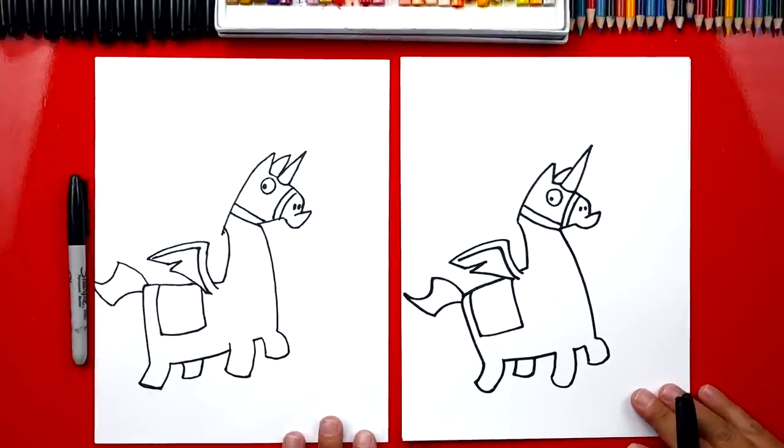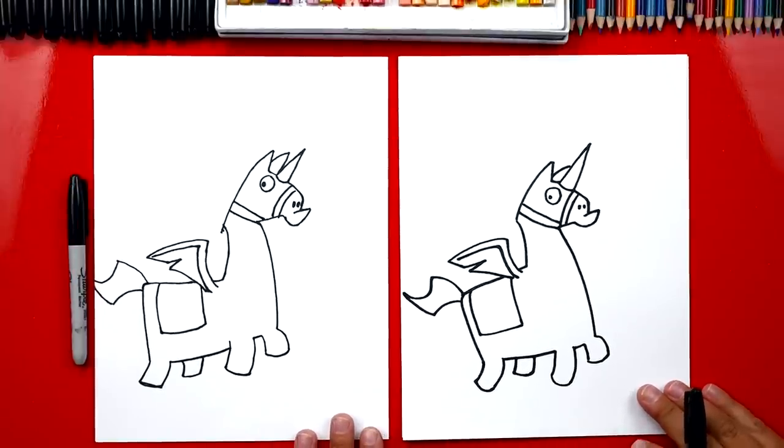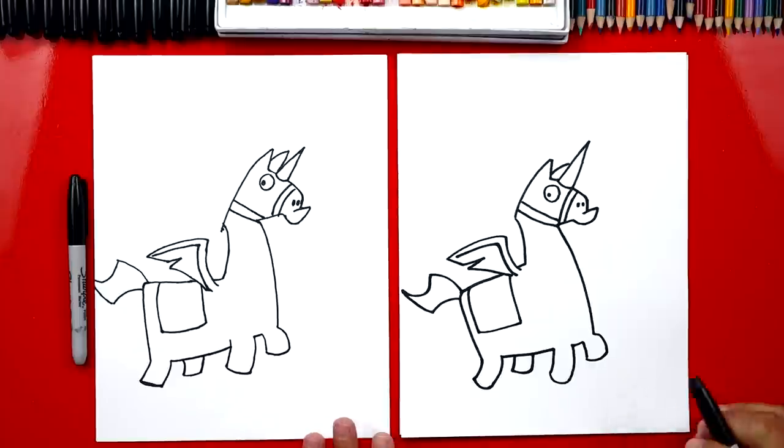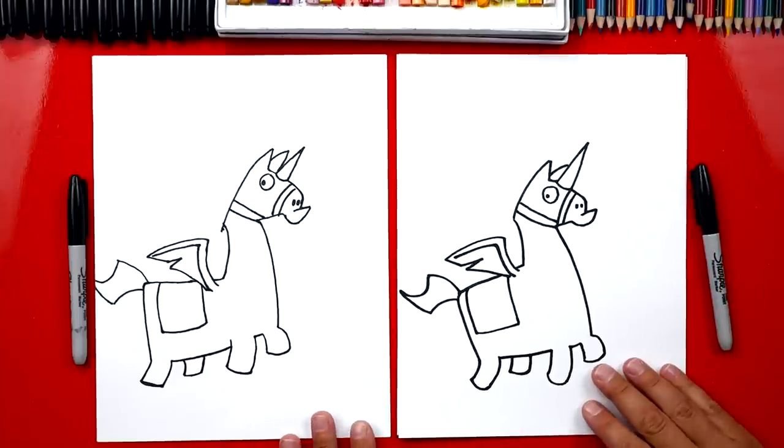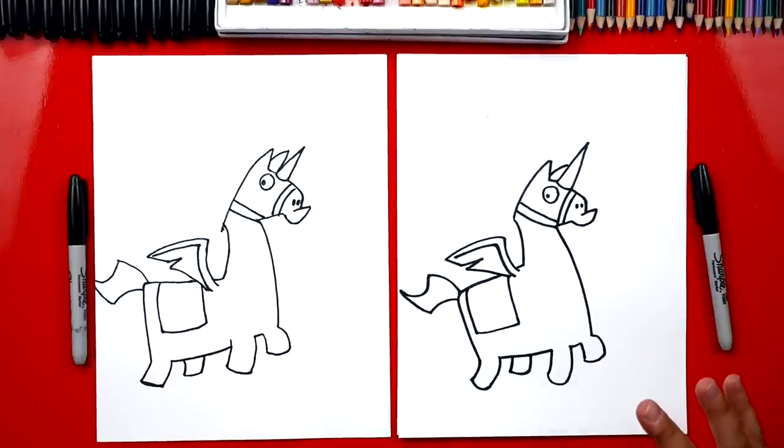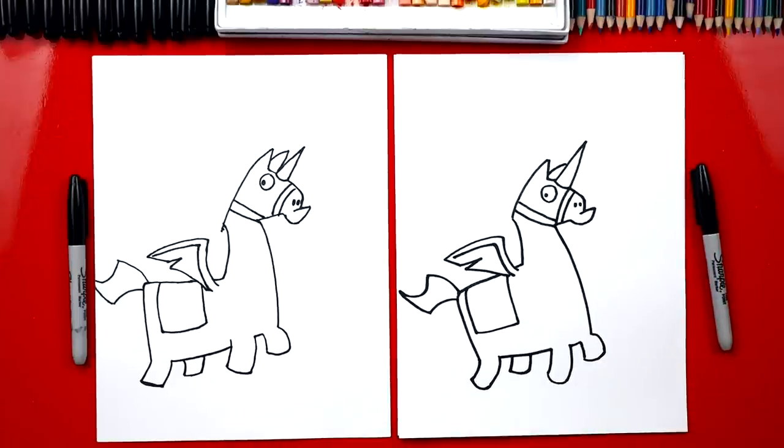All right dude, we did it, we finished drawing our, what is this thing called? Unicorn pinata, the unicorn pinata llama. But we still need to do one last thing, right? Color. Yeah, he's gonna look so much better once we color him. This part we're gonna fast forward, but at the end you guys can pause it to match the same color.